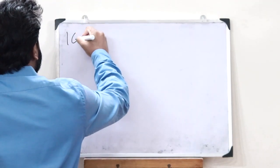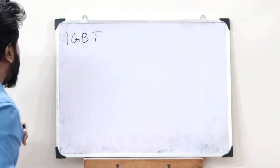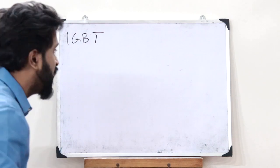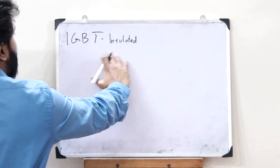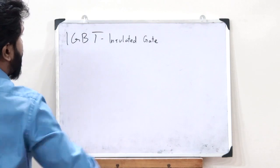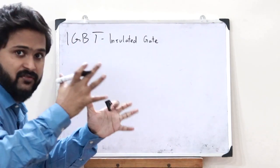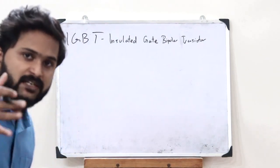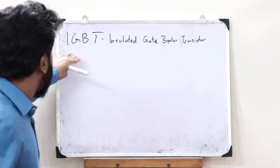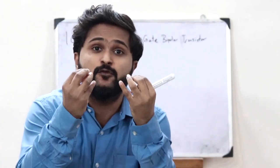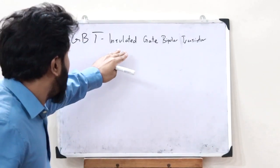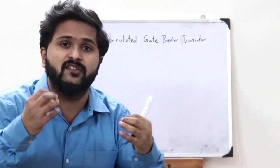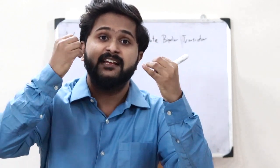IGBT is the abbreviation for Insulated Gate Bipolar Junction Transistor. This stands for I for Insulated, G for Gate, and BT for Bipolar Junction Transistor. So from this expansion of IGBT, what we deduce is that this is a type of bipolar transistor which has got an insulated gate.